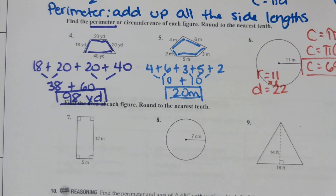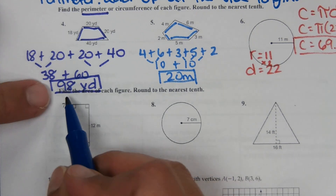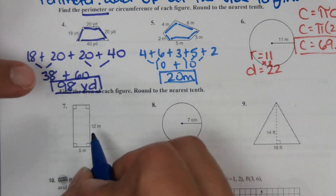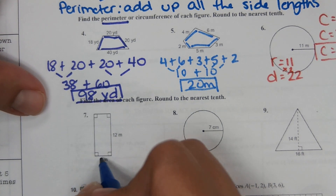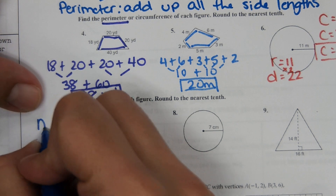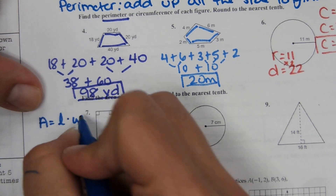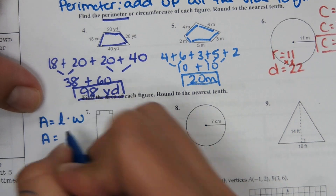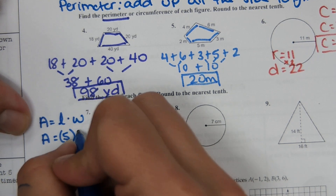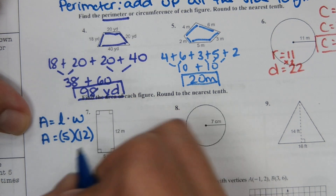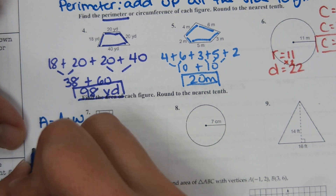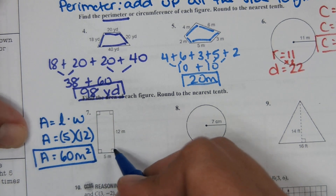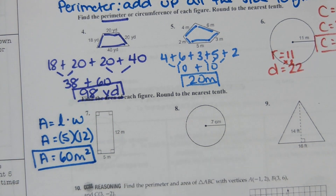The next section asks for the area of each figure — you identify the shape and determine which equation to use. This is a rectangle, so area equals length times width: 5 times 12. Area equals 60 meters squared. Which side you call length or width doesn't matter because you're multiplying them and order doesn't matter.